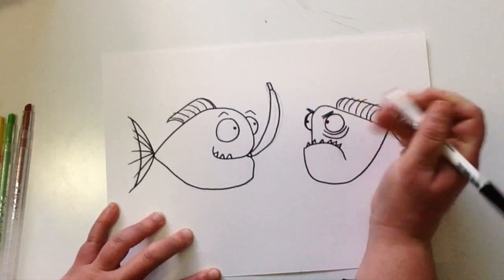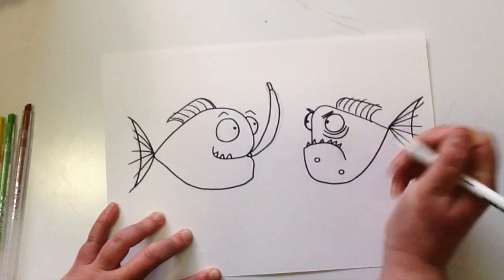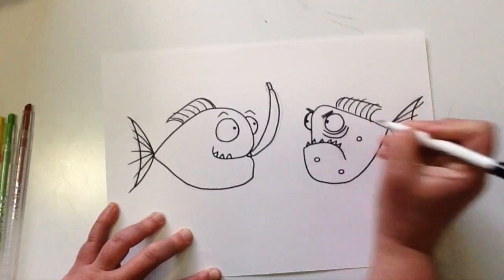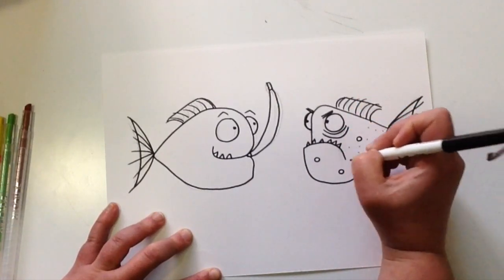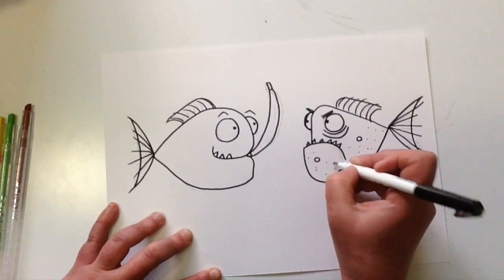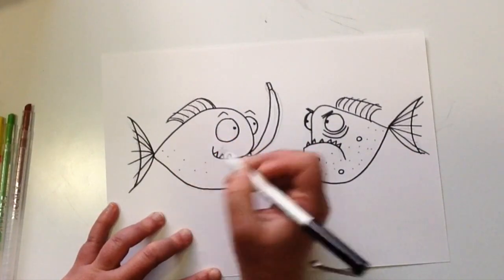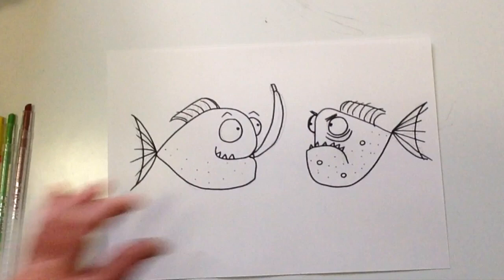For the angry piranha, I've made his body more square, more angular. I've added bag eyes, angry eyebrows, a frowned mouth, and I've also added some dots to his tummy as well.